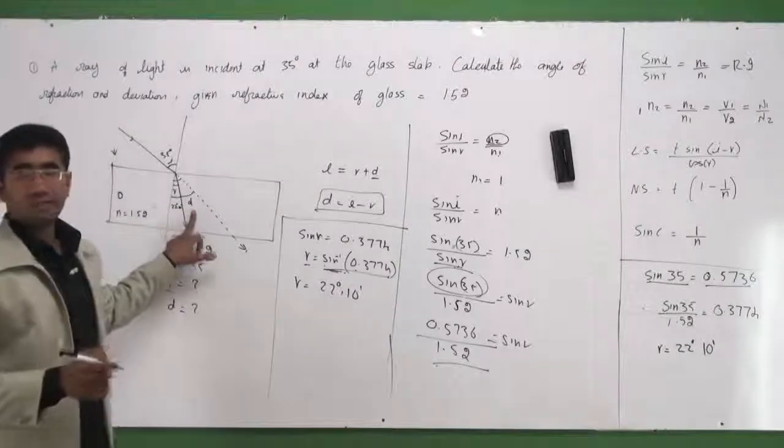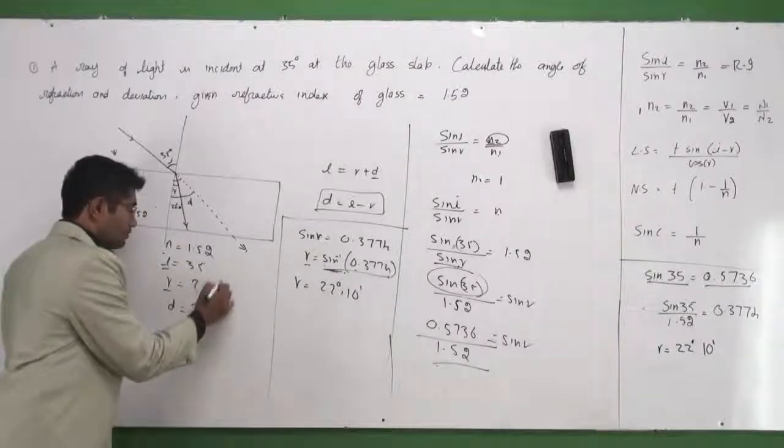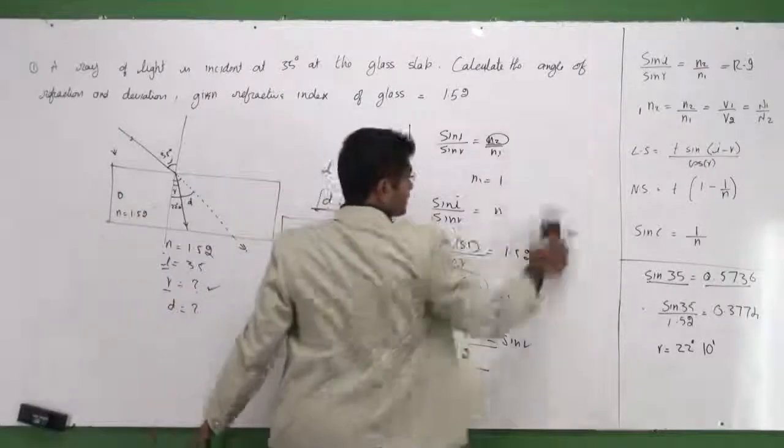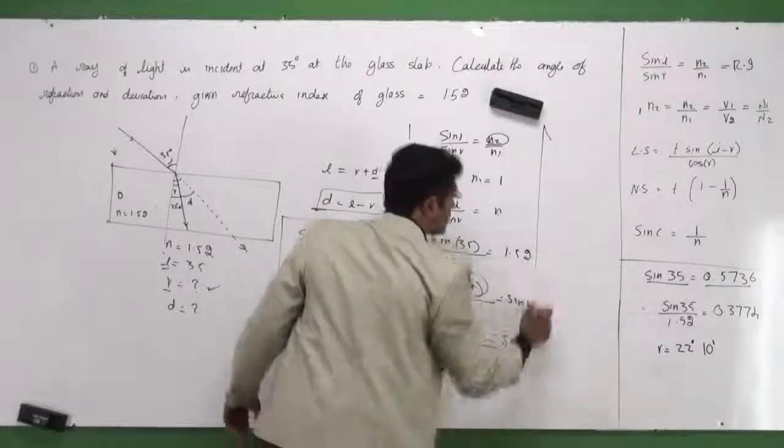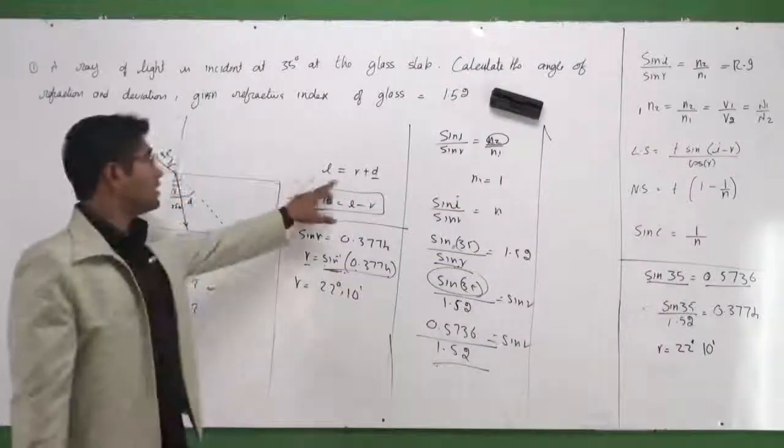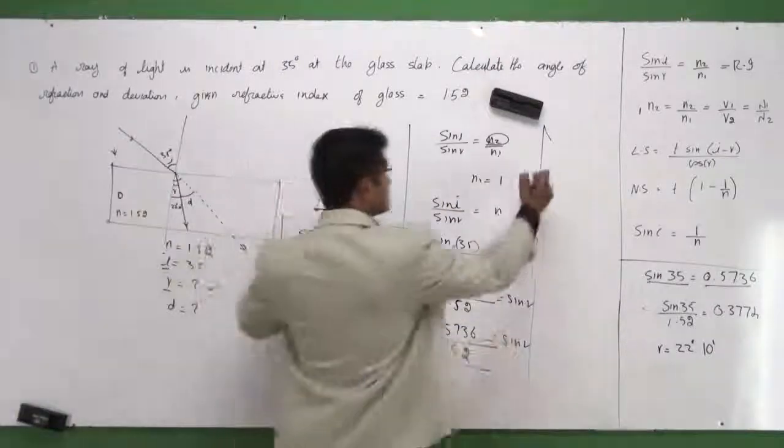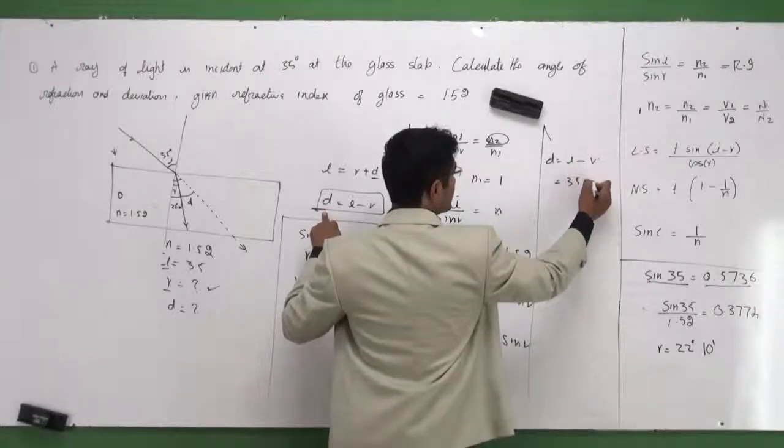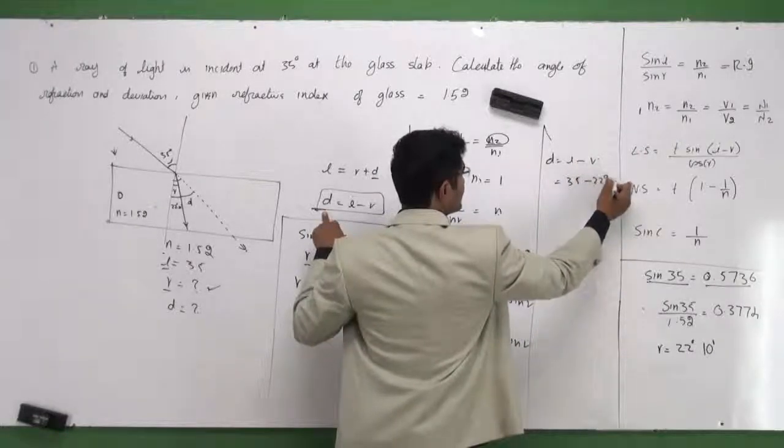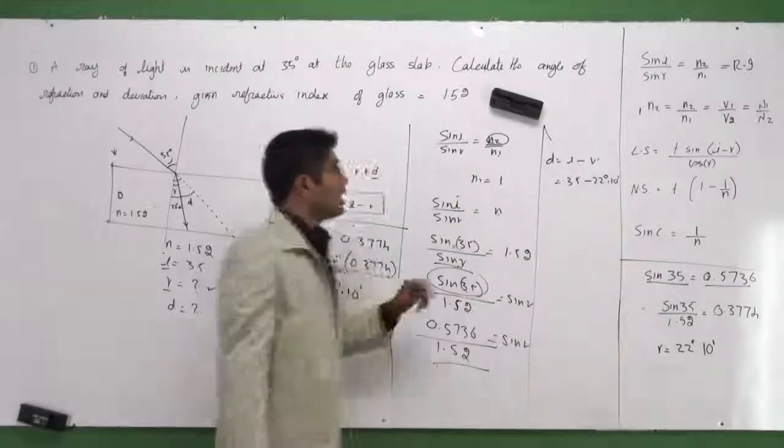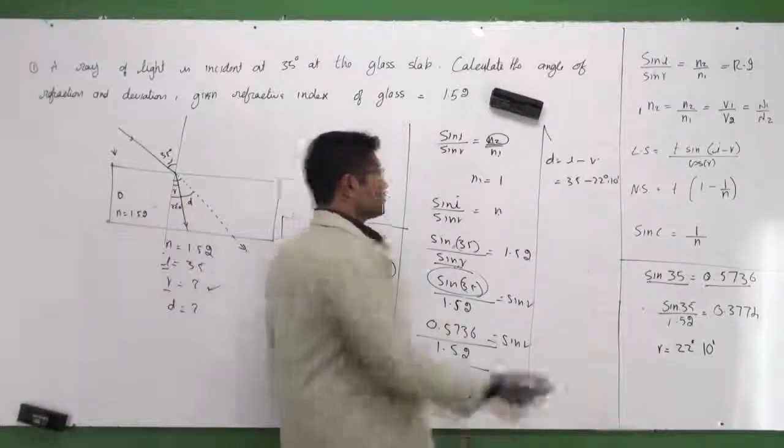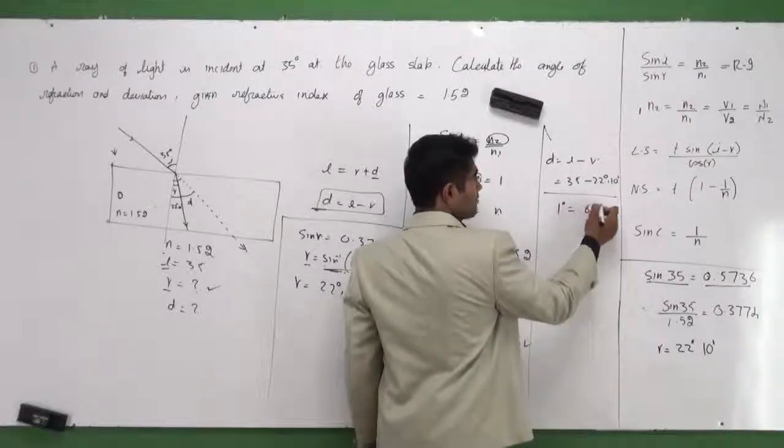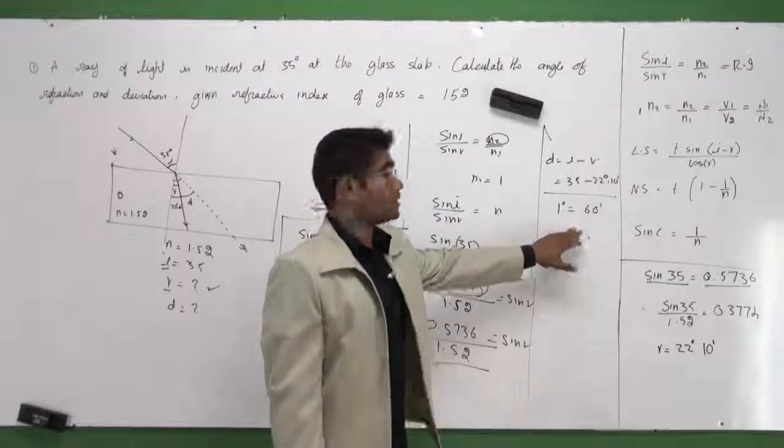Now how can I find D? Half of my problem is over. I need to find D. I can find D from this relationship—this relationship between i, r, and d. D is given as simply i minus r, and i was supposed to be 35, and this is 22 degrees and 10 minutes. How can I solve this? There's one thing you need to know here: every one degree is made up of 60 minutes. This is very important.